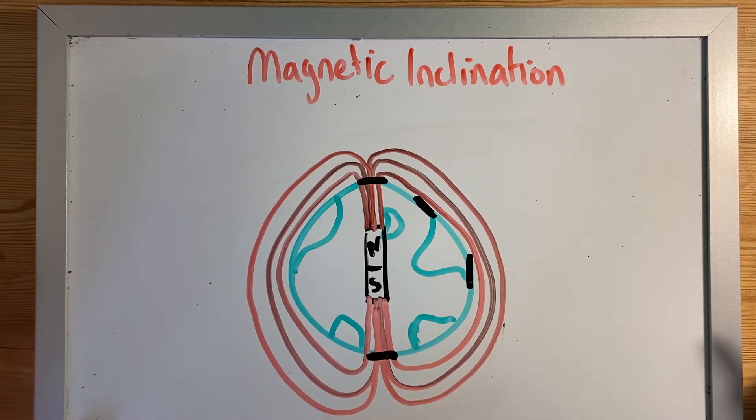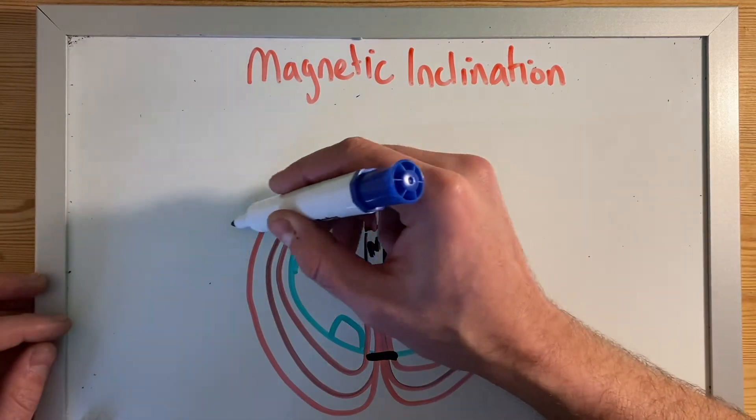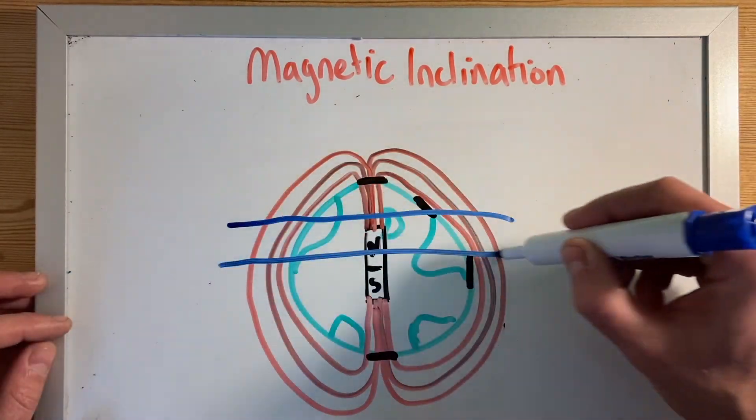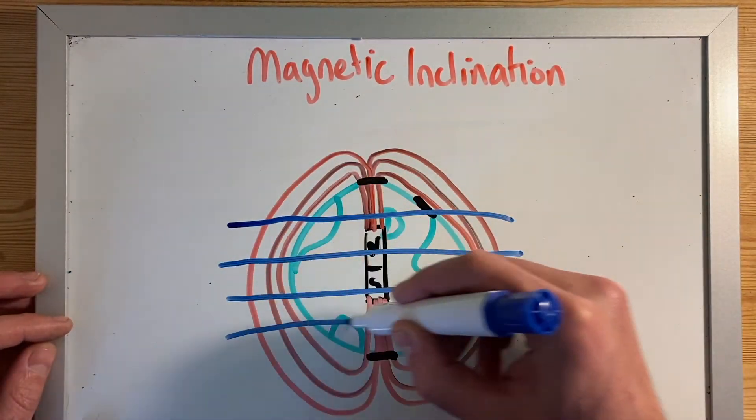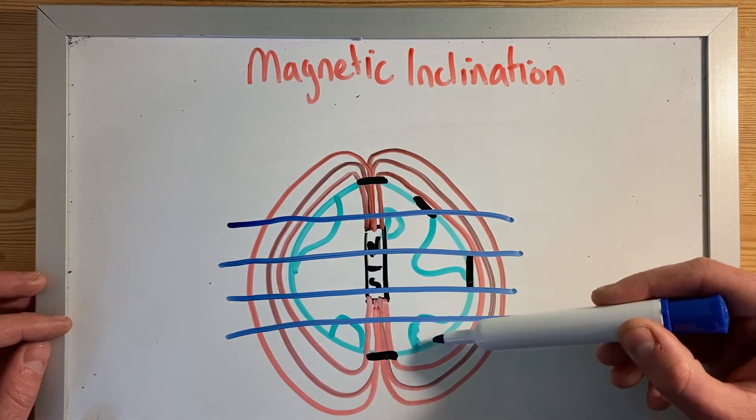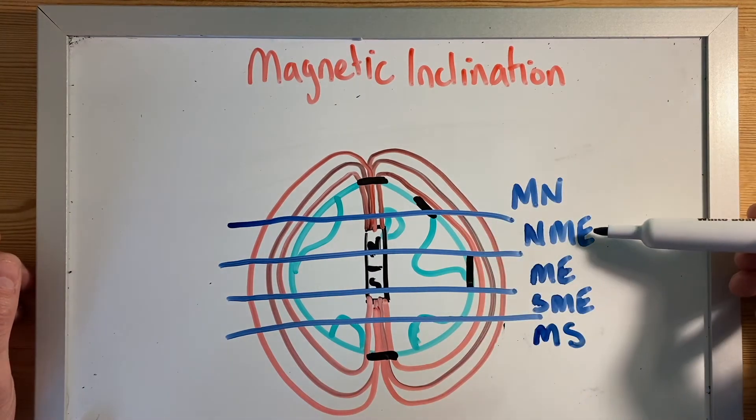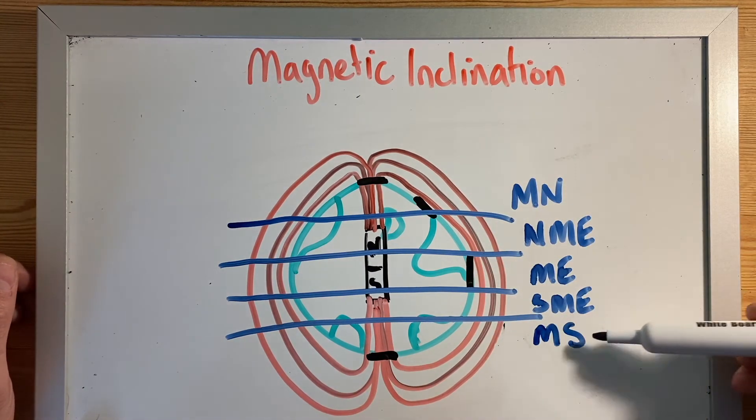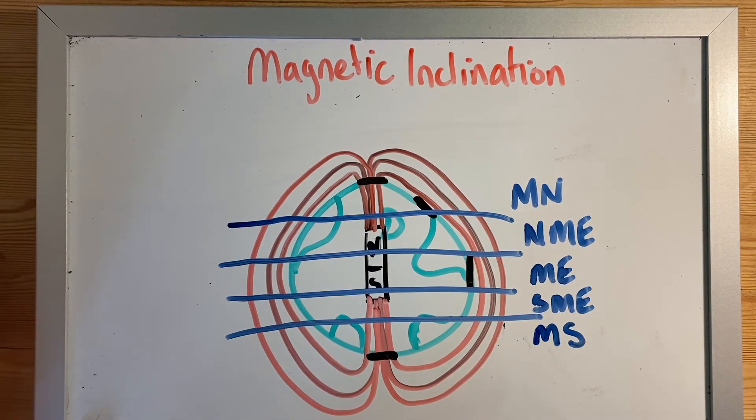Now, depending on where you go in the planet, you're going to need a compass that is calibrated for that particular point. So what has happened is the planet has been divided up into sections. Quite literally, five different sections across the planet. And each of these sections has been given a series of letters to denote what compass you need. And we're going to talk a little bit more about that.